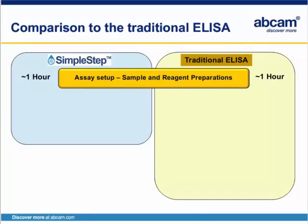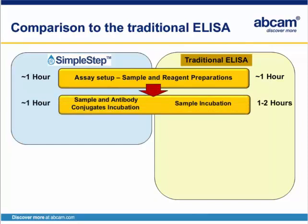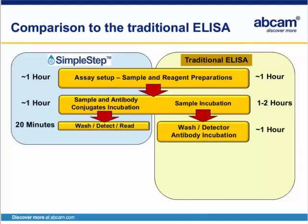Here is a summary showing a direct side-by-side comparison of the Simple Step ELISA on the left to the traditional ELISA on the right. Each technique begins with assay setup or sample and reagent preparations, which typically takes about one hour depending on the number of samples. Next is a one-hour incubation. In the traditional ELISA, this step is for the samples only and may take up to two hours depending on the manufacturer's instructions. In the Simple Step ELISA, this step covers the samples and antibody cocktail containing both capture and detector antibodies. After the one-hour incubation, the Simple Step ELISA is ready to be washed, developed, and read on a spectrophotometer.